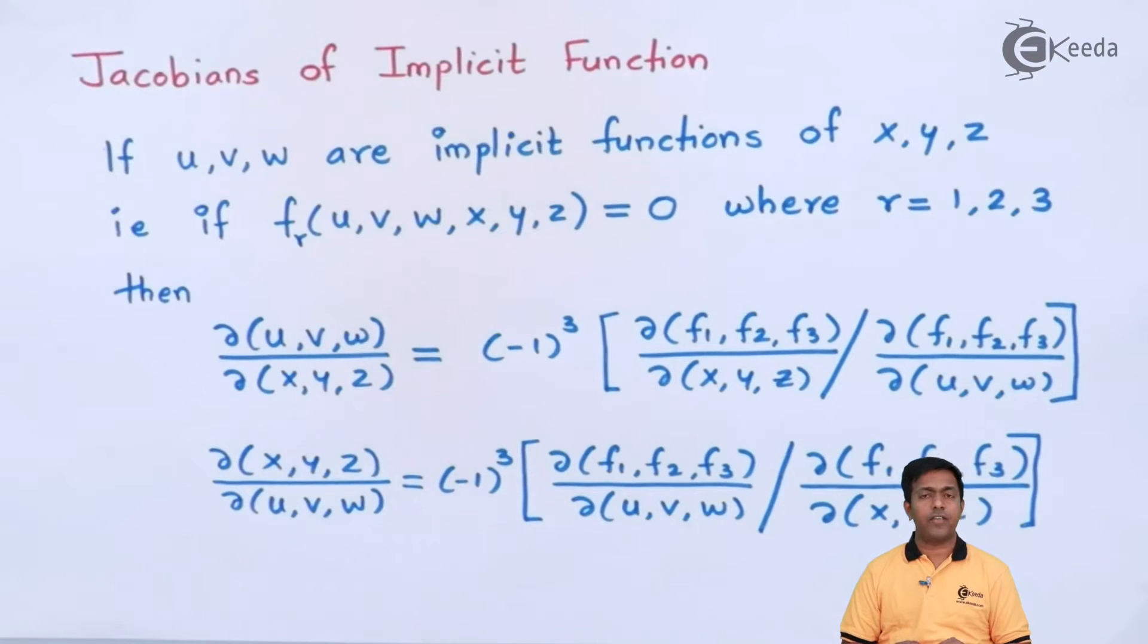So if we have implicit function, then the Jacobian of the implicit function is given by these two formulas. The first formula is Jacobian of u, v, w with respect to x, y, z. And the second formula is exactly reverse of that, that is Jacobian of x, y, z with respect to u, v, w.